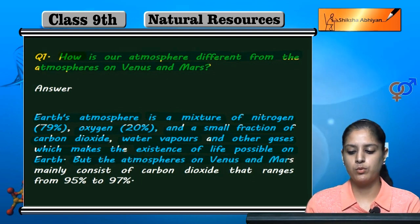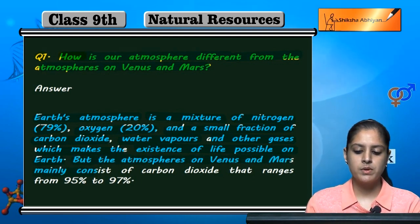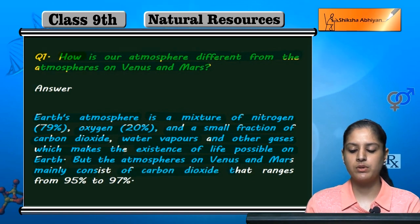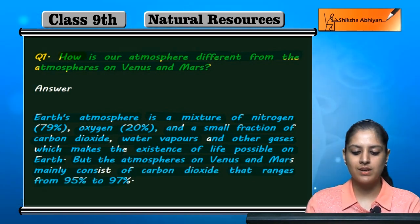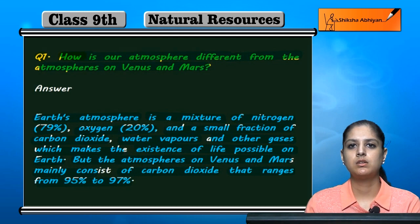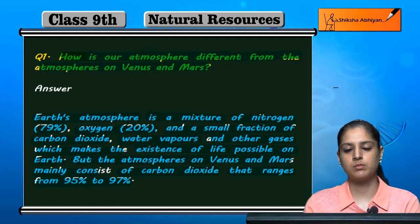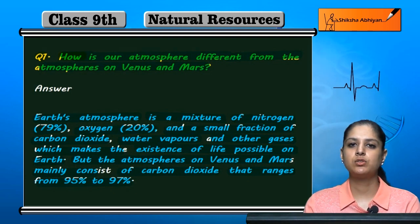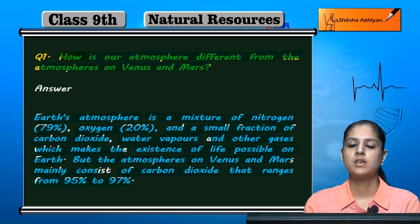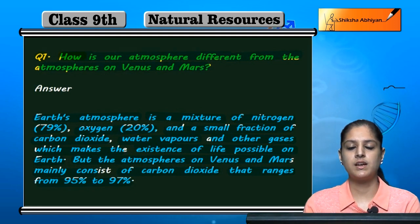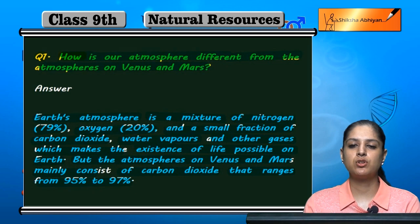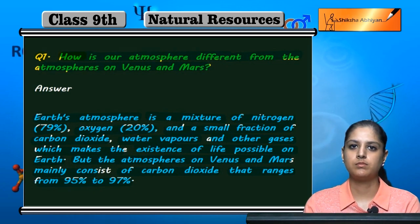But if we talk about Venus and Mars, the atmosphere mainly consists of carbon dioxide, which is 95% to 97%. The major portion of Venus and Mars is constituted by carbon dioxide gas only, and due to this, life is not possible there.